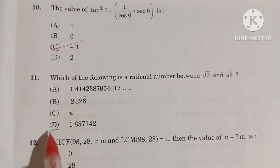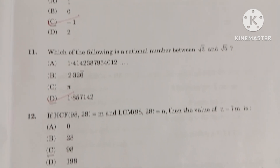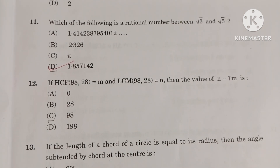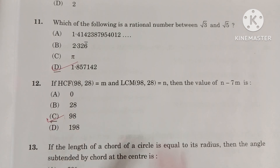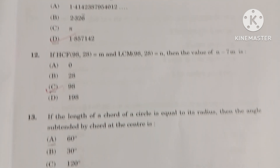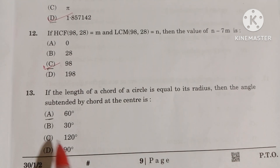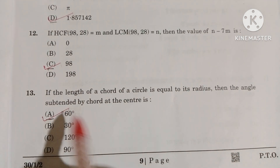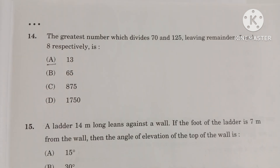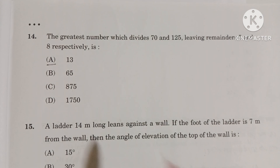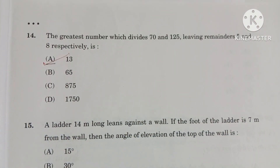Question number 11: D option is the correct option. Question number 12: C option is the correct option. And in question number 13: A option is the correct option. Question number 14: A option is the correct option.